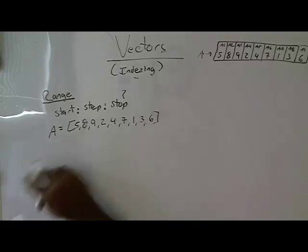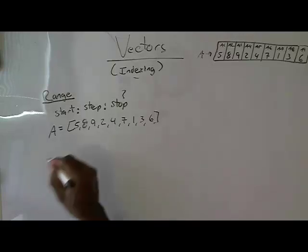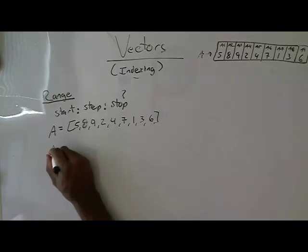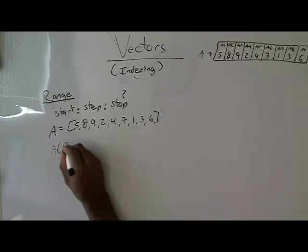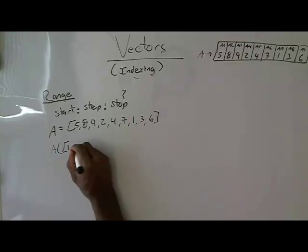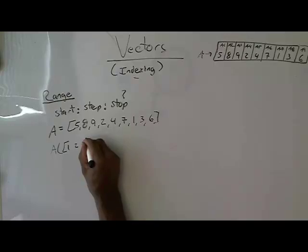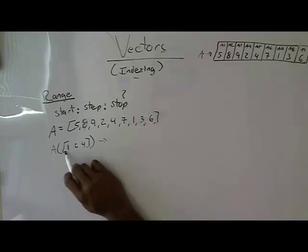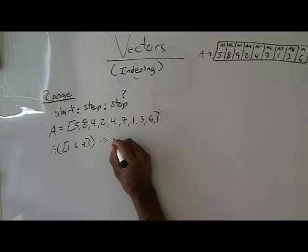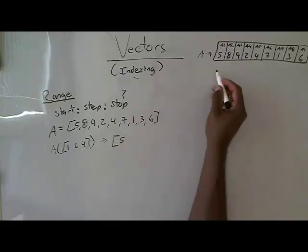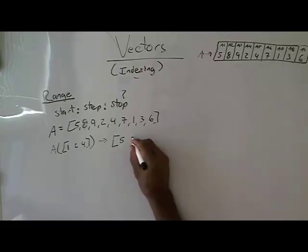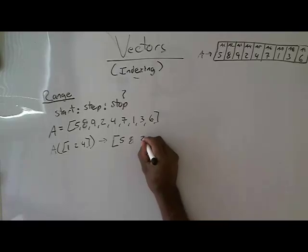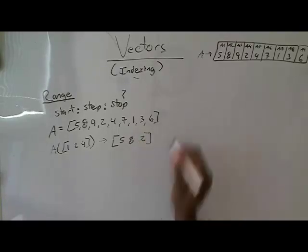So now I'm going to index this with my range operator. So let's go in here and say, give me A indexed at one, two, four. So this is using a vector to index a vector. What that's going to return is the element in A at one, which is five, the second value, which is eight, and the fourth value, which is two. So it's five, eight, two.